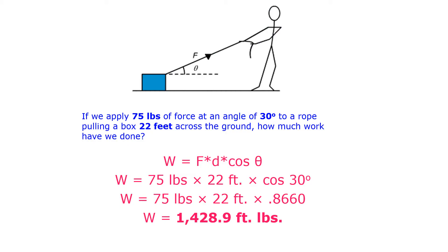If we apply 75 pounds of force at an angle of 30 degrees to a rope pulling a box 22 feet across the ground, how much work have we done? Work equals force times displacement times the cosine of theta, where force is 75 pounds, displacement is 22 feet, and theta is 30 degrees. The cosine of 30 degrees is 0.8660, so we have 75 × 22 × 0.8660, giving a total of 1,428.9 foot-pounds of work. It is recommended to carry cosine numbers out to four decimal places.